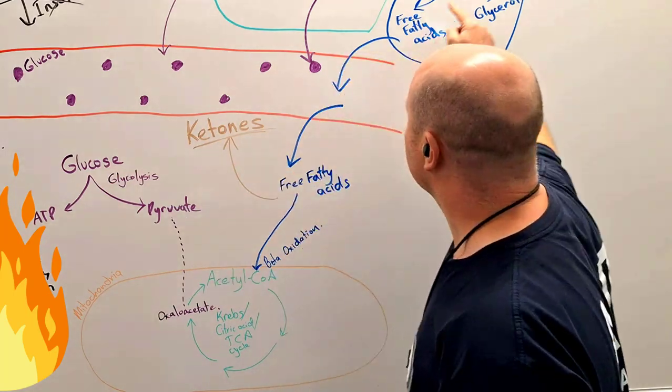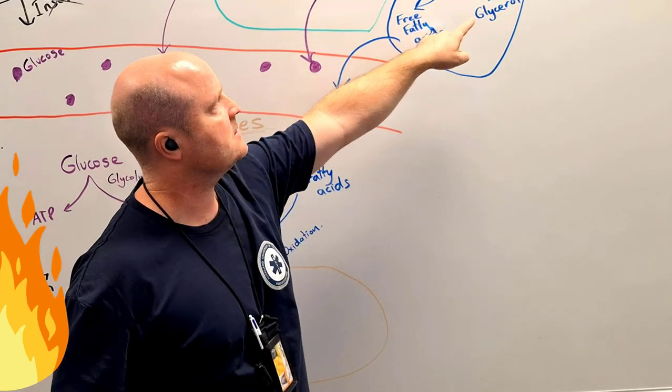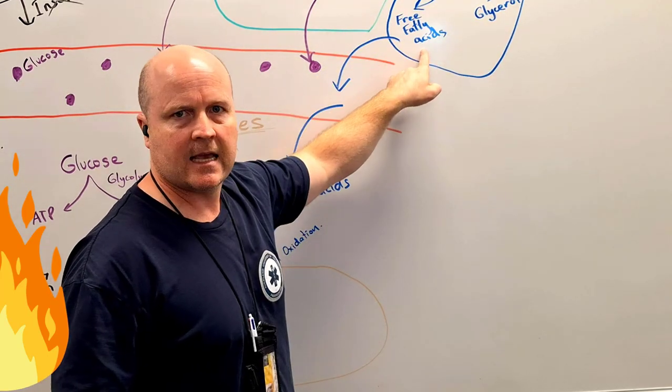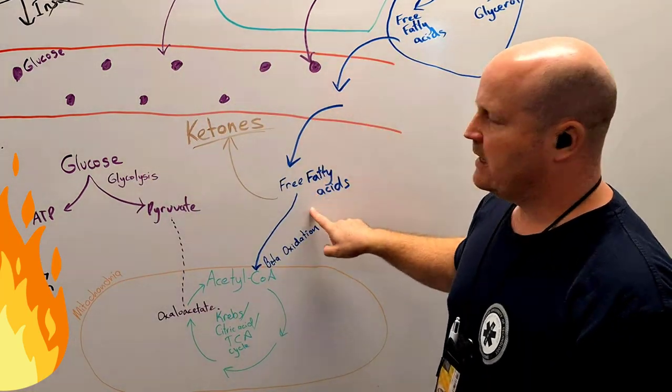And when we break down our fat cells, when we break down our triglycerides and our fat cells via lipolysis, we get free fatty acids, and then the free fatty acids enter the blood and then enter the cell.